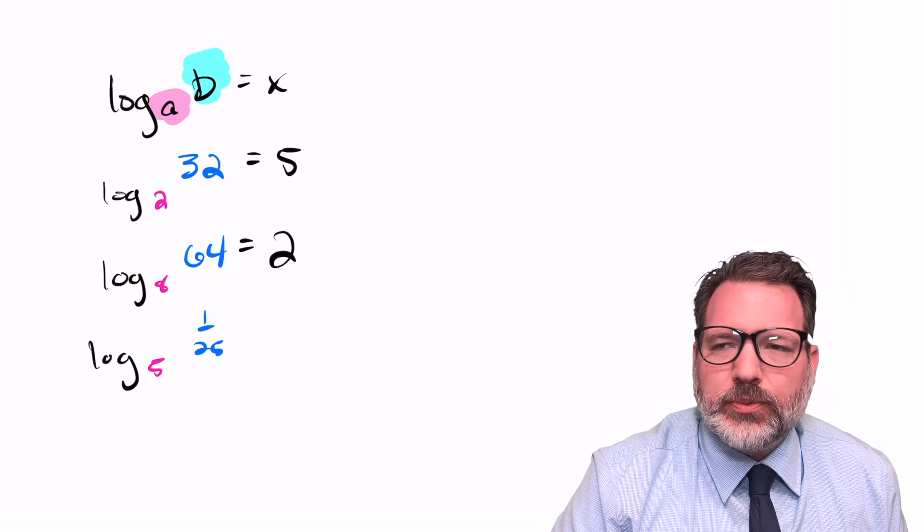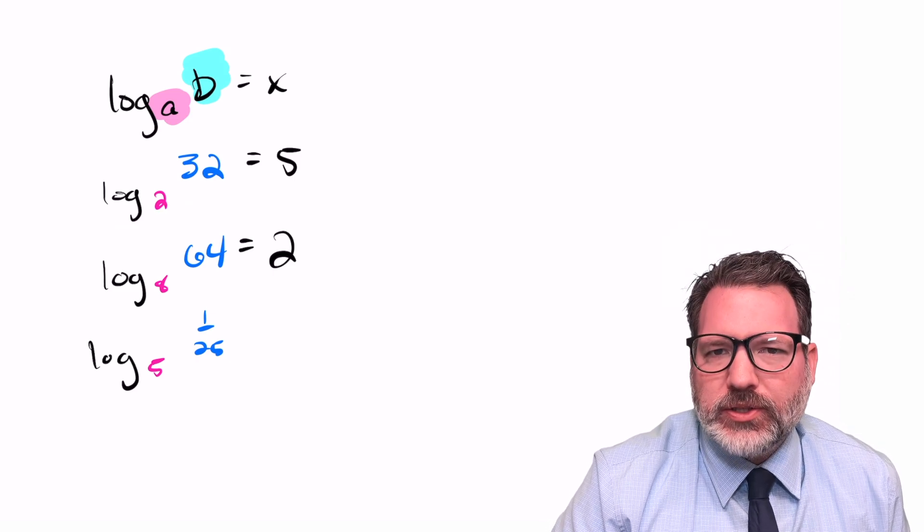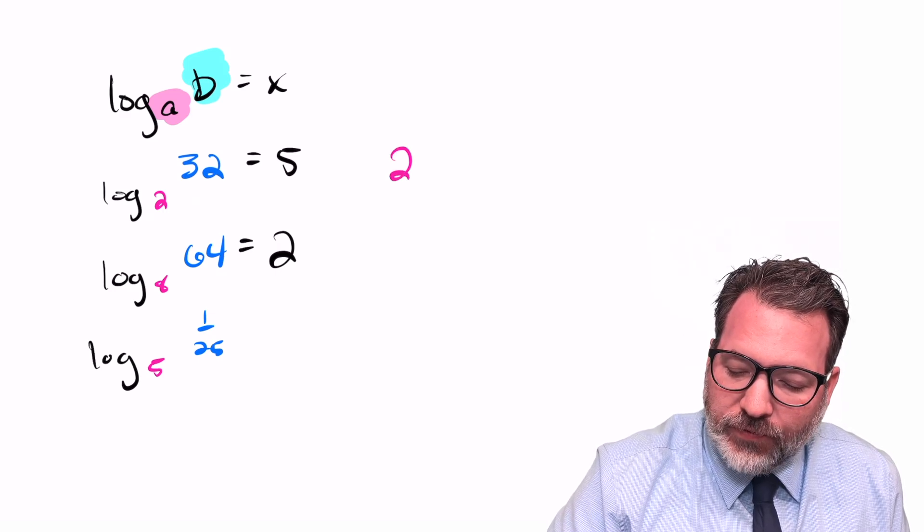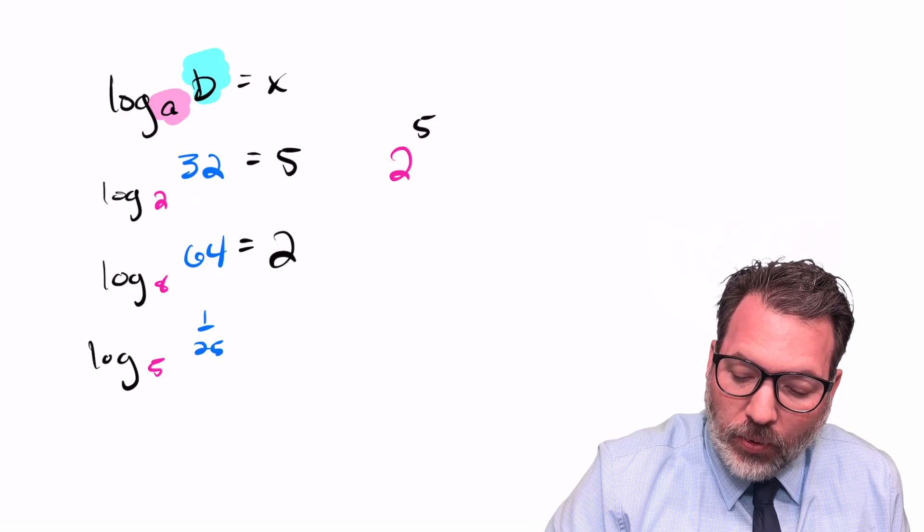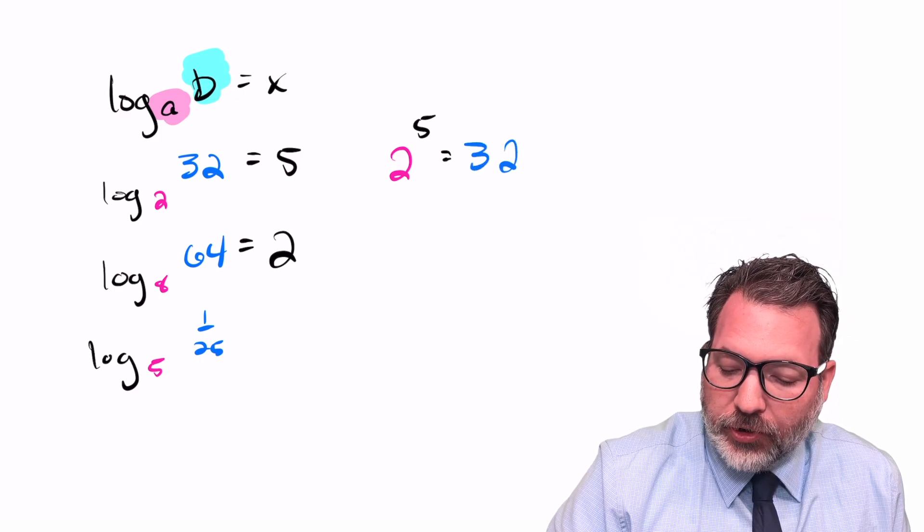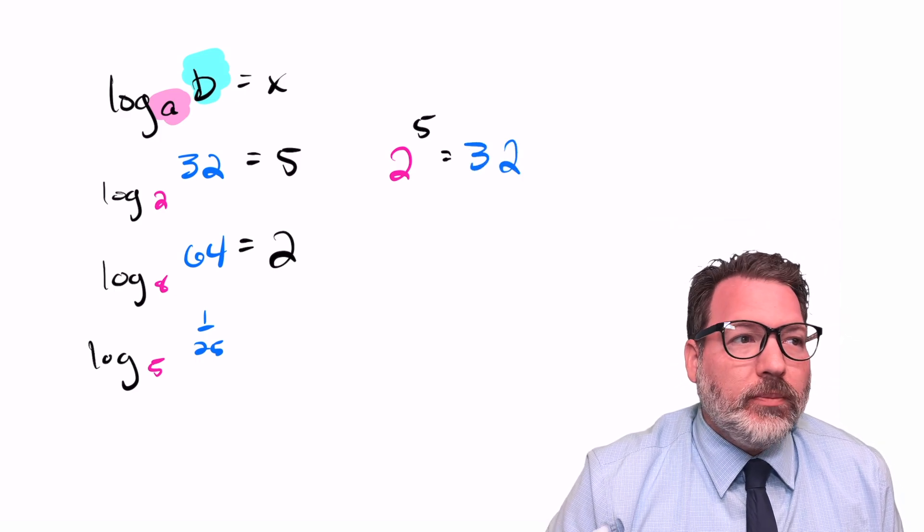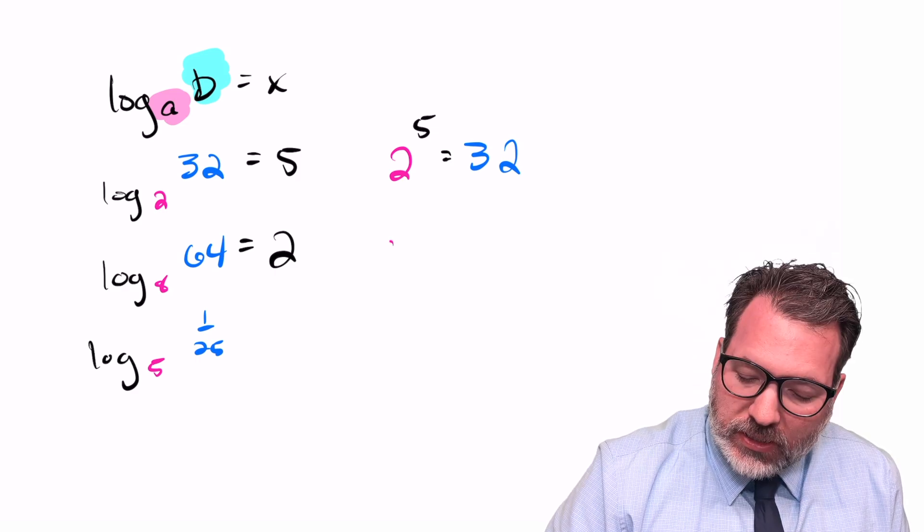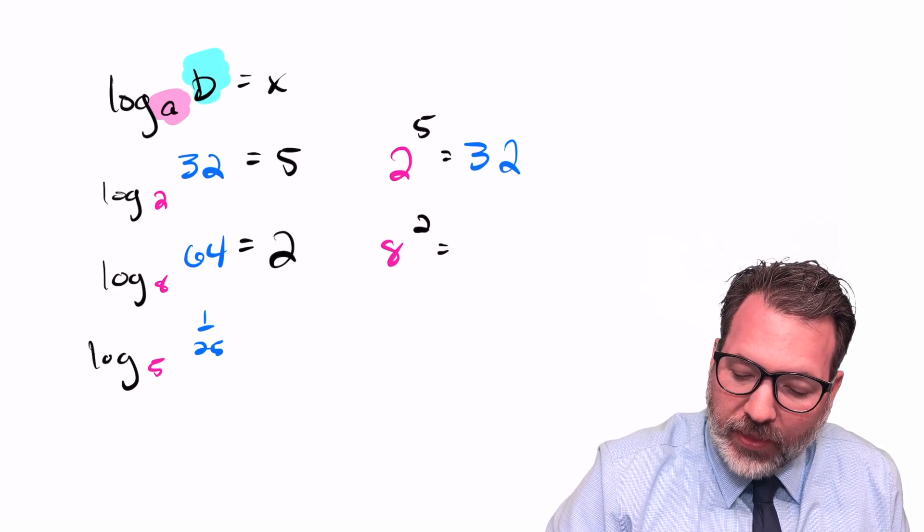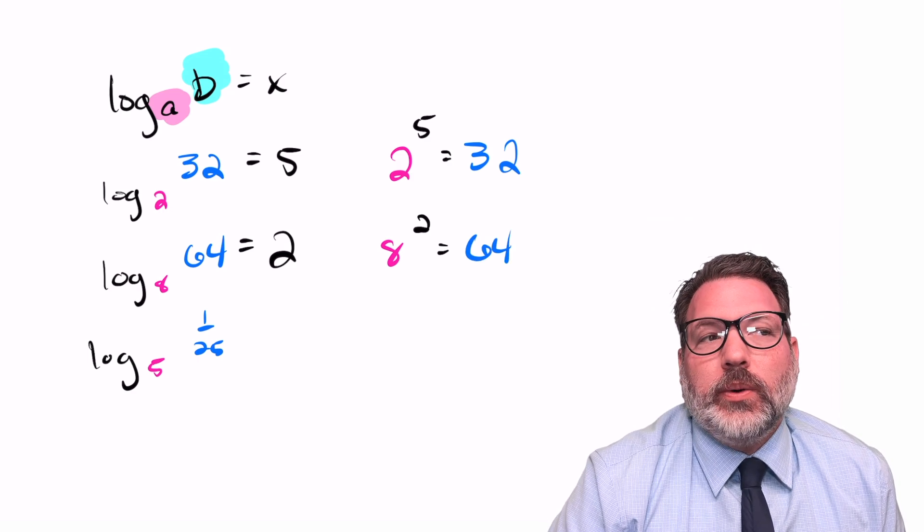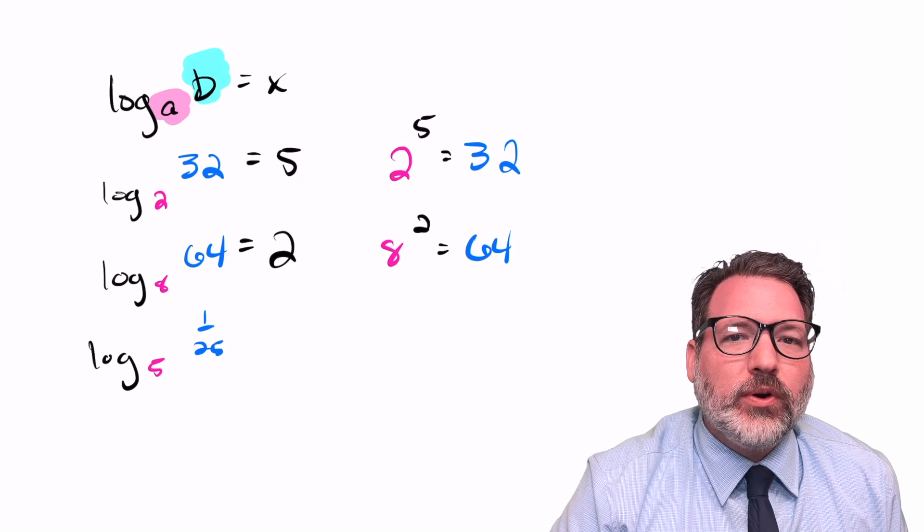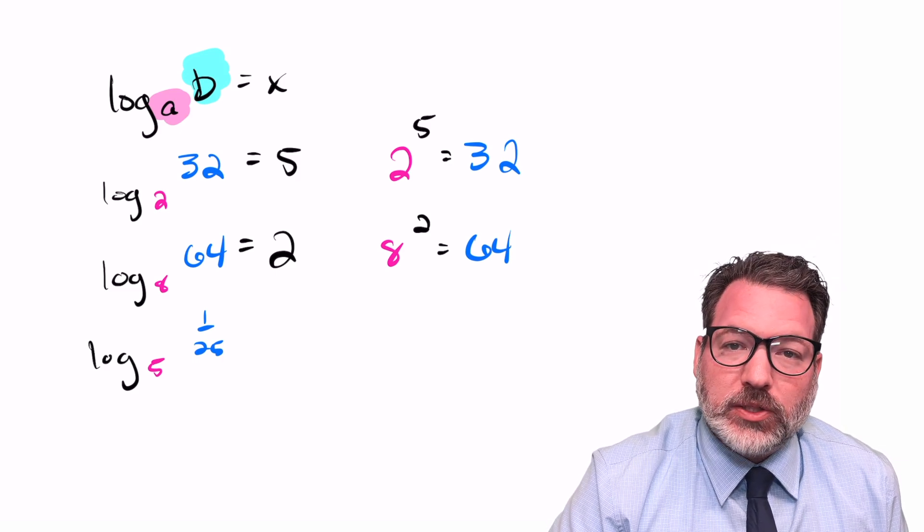Let's take a second look at some of these problems. When we say log base 2 of 32 is 5, what we're actually saying is that if you raise 2 to the power of 5, you get back 32 as a result. That's what it means to multiply a 2 by itself over and over again. Similarly, it's 8 to the second power that makes 64.